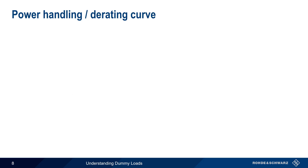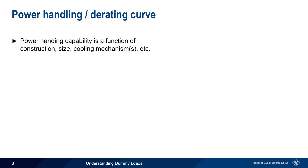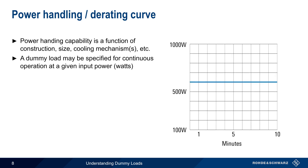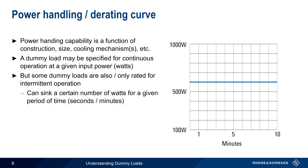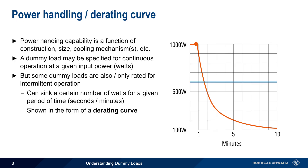The other important characteristic of dummy loads is their power handling ability, which is a function of their construction, size, cooling mechanisms, etc. The maximum power that can be safely dissipated may be specified as a continuous value — for example, a dummy load may be able to dissipate 600 watts indefinitely. But many dummy loads are also, or only, rated for intermittent operation — that is, how many watts can be dissipated for what period of time. This is most often given in the form of a derating curve, such as the one shown here. This load can dissipate up to 1000 watts for about 1 minute, or up to 200 watts for up to 5 minutes.